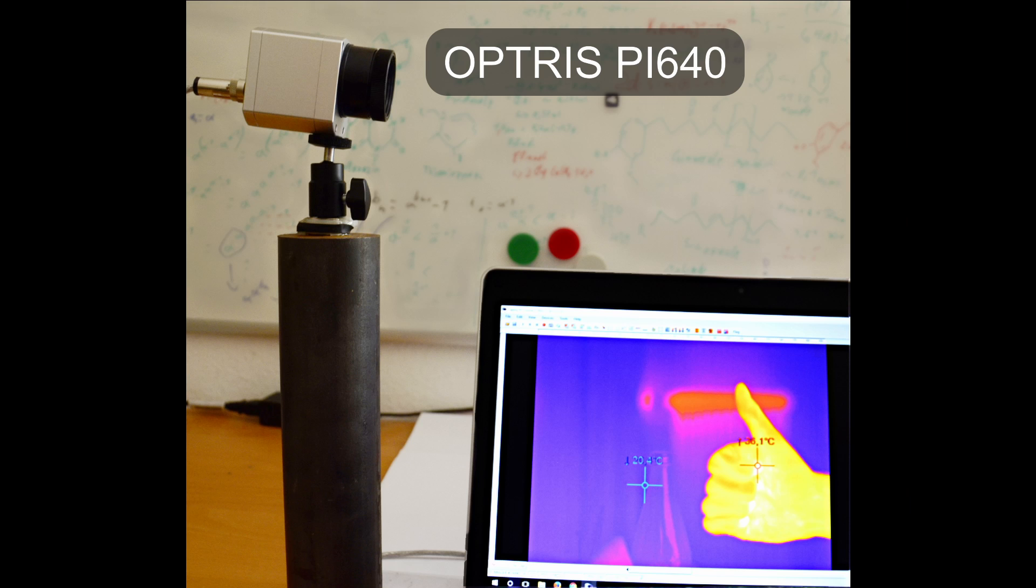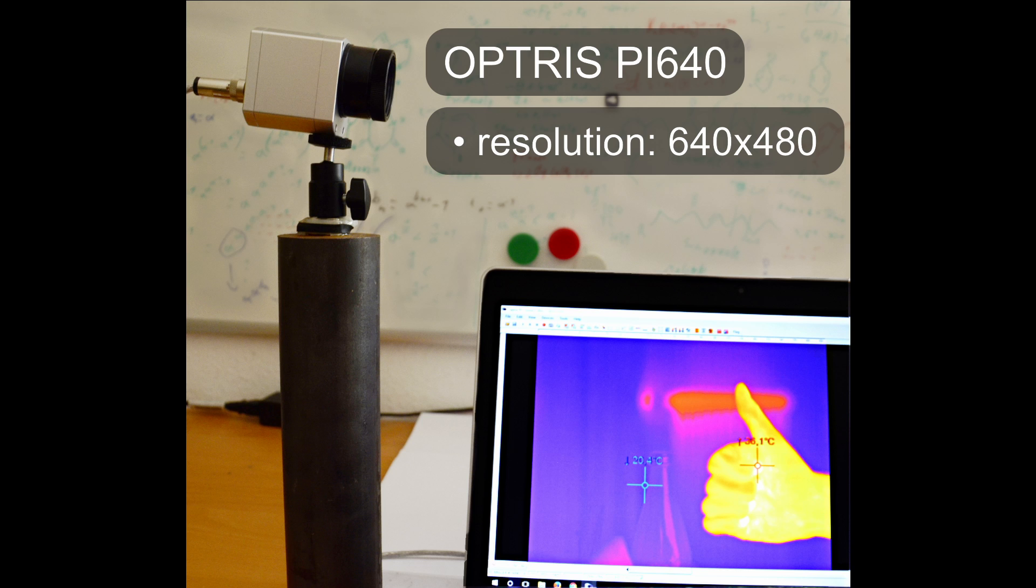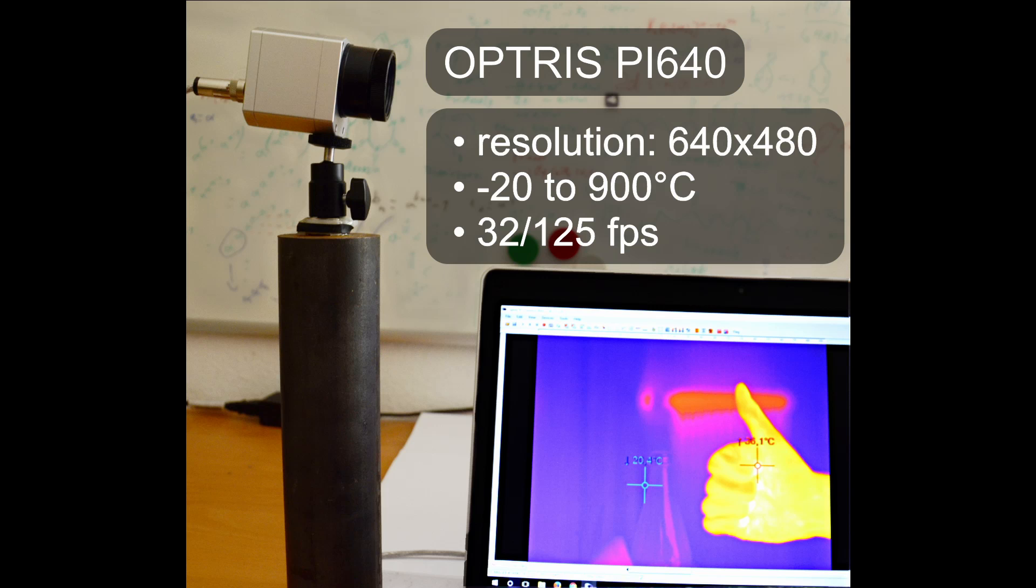The camera I am using is an Optris PI640 with a resolution of 640x480 and a temperature range of about minus 20 to 900 degrees C. Now what can you do with it?